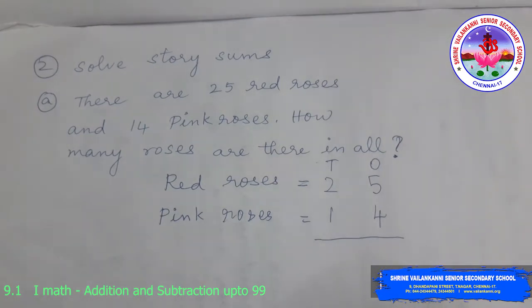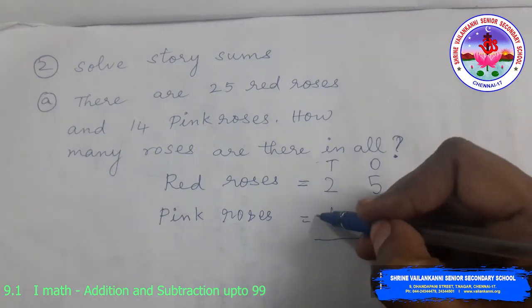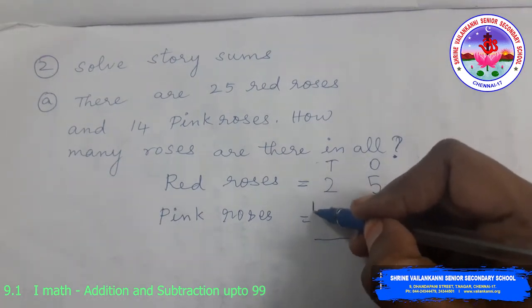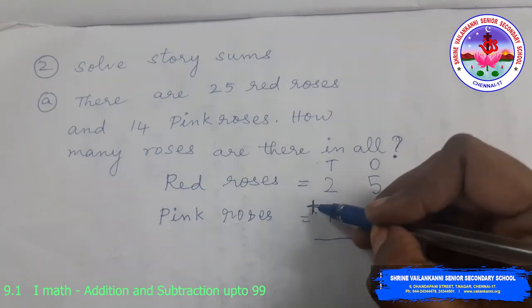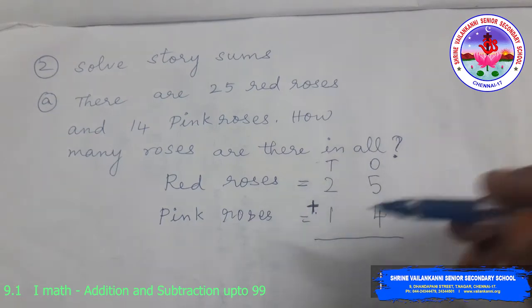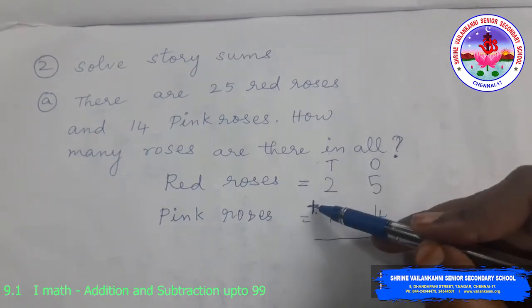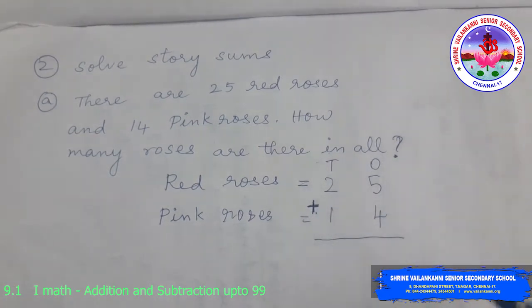So now you have to find out total. So what are you going to perform? Addition. So the symbol you have to put. You have to put the symbol. This is really very must, must. You have to put the symbol. Whatever you are doing, addition, subtraction, you have to put the symbol.